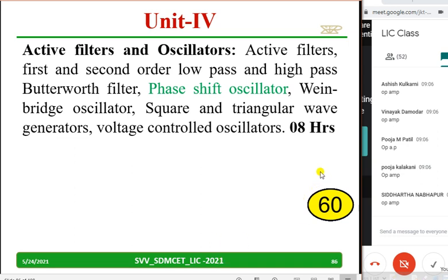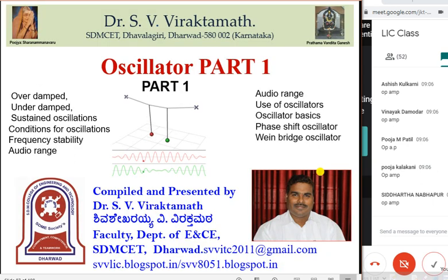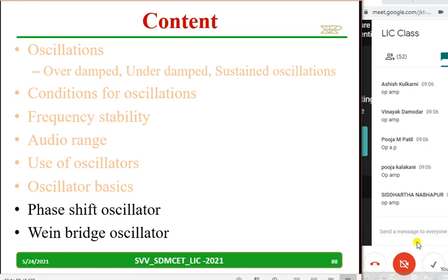As you have already studied about the oscillator, this video is already available on YouTube — the same slides I am using with a little modification. I have made two parts: oscillator part 1 covering basics, oscillator part 2 discussing Wien bridge oscillator and other oscillators. Today we will revise oscillations: over-damped, under-damped, sustained oscillations, conditions for oscillations, frequency stability, audio range. Then we go to phase shift oscillator, then Wien bridge oscillator.